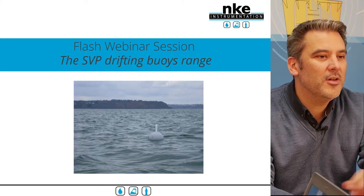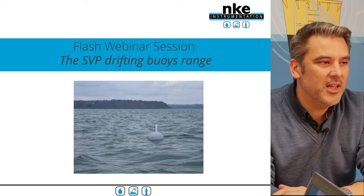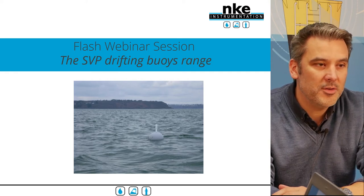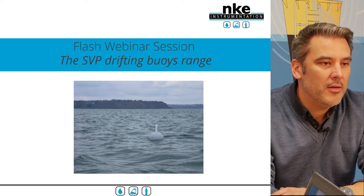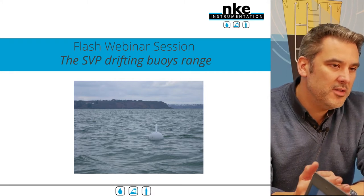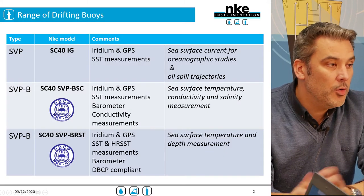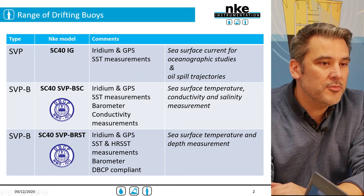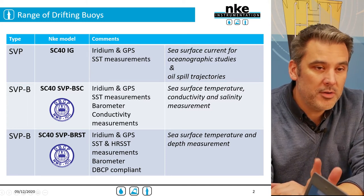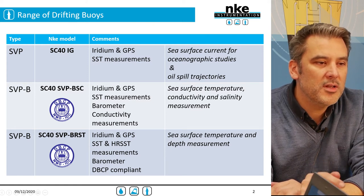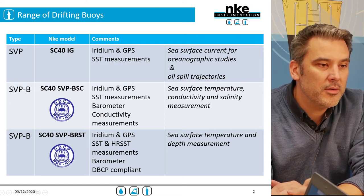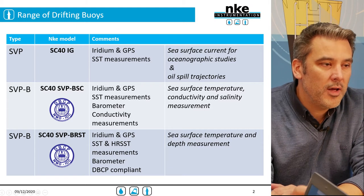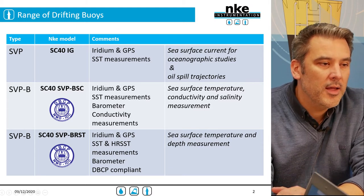Hello and welcome to this flash webinar session dedicated to the SVP drifting buoy range at NKE. I will introduce to you all the range of products, from the basic to the new application versions. The range of drifting buoys is composed mainly of three versions. The first and basic version is the SC40IG for sea surface current studies and oil spill trajectories. The two other buoys are DBCP compliant and offer additional measurements.